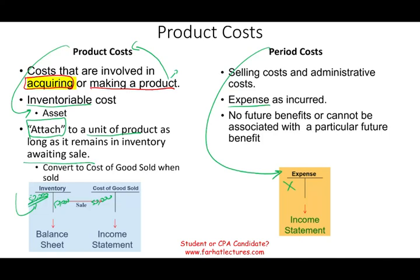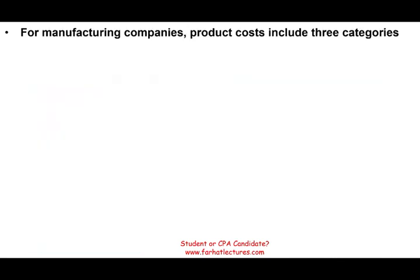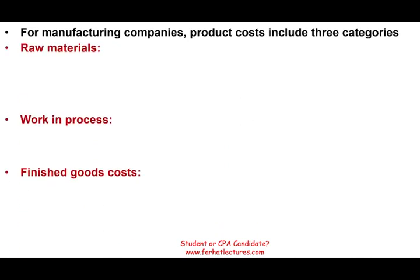Now let's focus on what constitutes product cost for a manufacturing company. For any manufacturer, there are usually three inventory categories: raw material, work in process, and finished goods. You need to be familiar with those three terms as a managerial accounting, cost accounting, CPA, or CMA candidate.